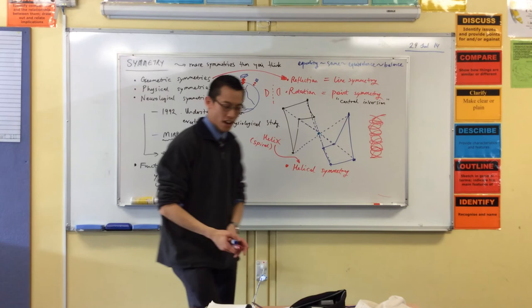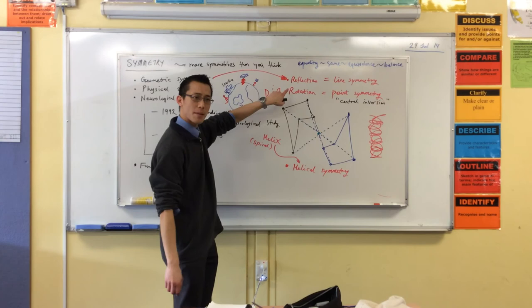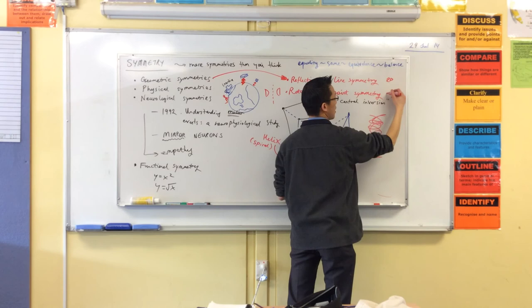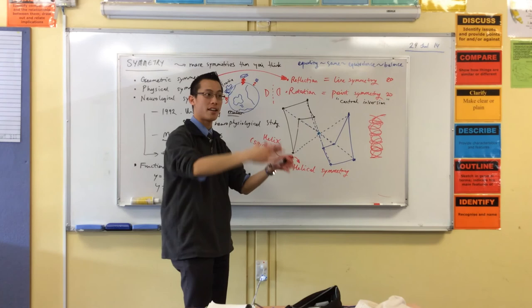Now, the reason why you haven't heard about this so much is because line symmetry and point symmetry are both on a plane and they're really easy to understand. So, that's 2D and that's 2D. But helical symmetry, it needs another dimension. It's 3D.